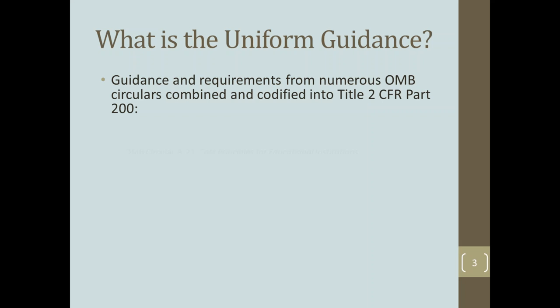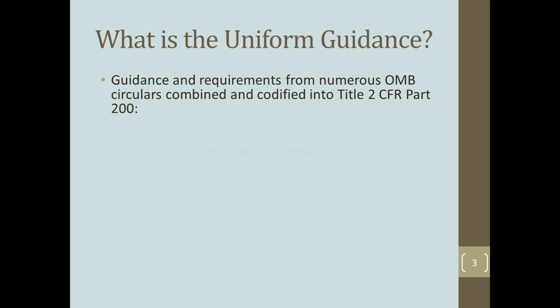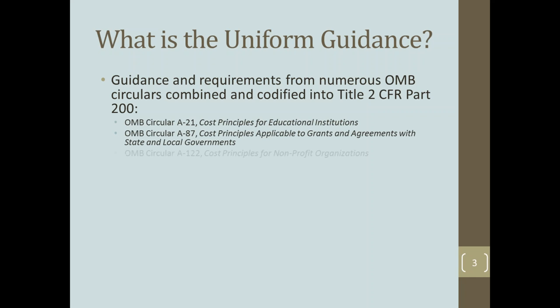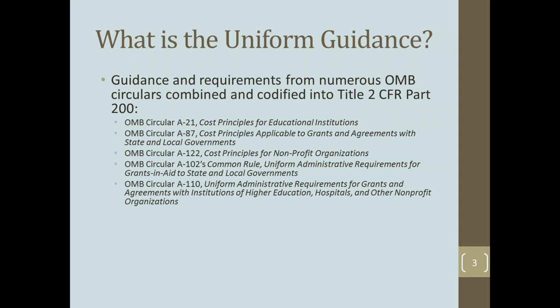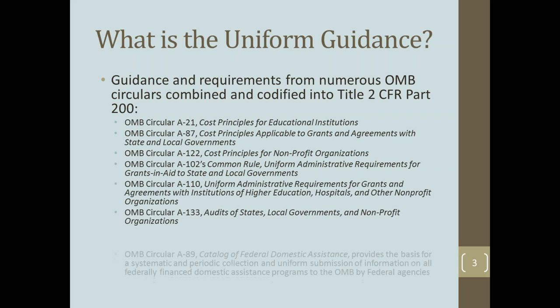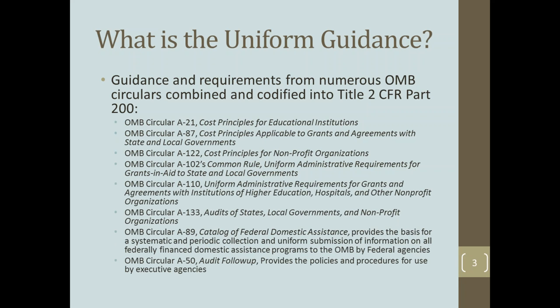The Uniform Guidance is a compilation of several OMB circulars that have now been codified into Title II, Part 200. First, there are cost principles: A21 for educational institutions, A87 for state, local, and Indian tribal governments, and A122 for non-profits. Next, there are uniform administrative requirements, which encompass A102, the common rule, and A110. Then there are audit requirements for federal awards, including A133, which applies to states, locals, non-profits, and higher education. Finally, there are circulars for the federal agencies, including A50, covering audit follow-up for federal executive agencies, and A89, which covers requirements for the CFDA.